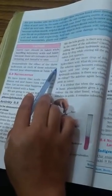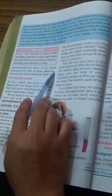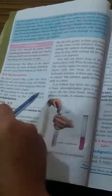Demonstrate the effect of three indicators on each of the solutions. Now this is what you have done. The two activities we have done. Now you must be knowing how to tell whether a substance is acid or a base.